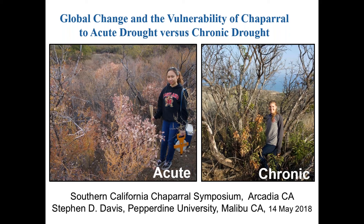My talk deals with a global change in the vulnerability of chaparral to acute or chronic drought. On the left there's acute drought — this picture was taken in the wettest month of the year, February 2014, and we see death. The chaparral shrubs died due to a very deep acute short drought period. These species are shallow-rooted and they don't sprout after fire.